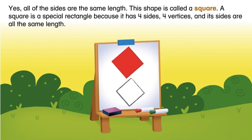A square is a special rectangle because it has four sides, four vertices, and its sides are all the same length.